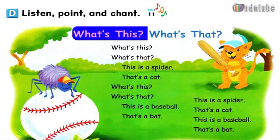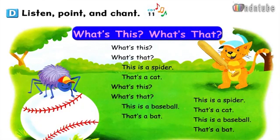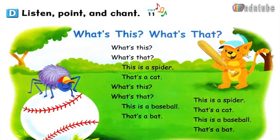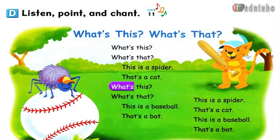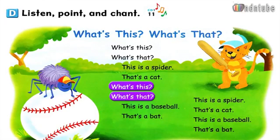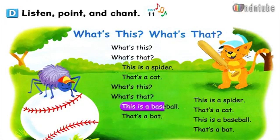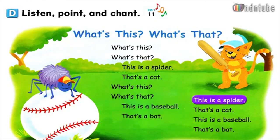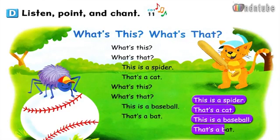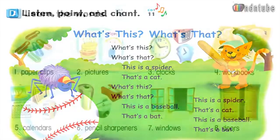What's that? What's this? What's that? No, it isn't. That's a bat. This is a spider. That's a cat. This is a baseball. That's a bat. Paperclip. Page 8.